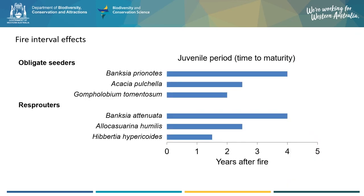One aspect I looked at was how long after fire plants would need to begin flowering and reproducing again — we call this the juvenile period. This figure shows data for the juvenile period of some key woody shrub and tree species that I studied in Banksia woodlands, split up by the fire response types: obligate seeders or re-sprouters. This shows that even the fire-killed species that have to grow from seedlings after fire return to flowering within a few years. The part of this story that we're still working on is whether this flowering translates directly to seed production, which is the ultimate measure of whether populations can recover after fire.